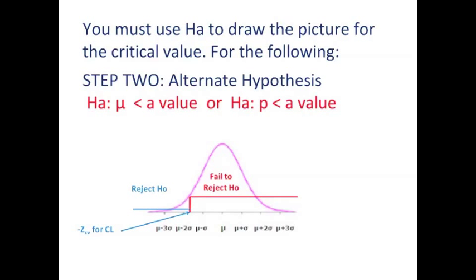Now, here we have the reverse scenario, where mu is less than a value, or P is less than a value. Notice that the way the error points, it points us directly to the rejection region. And if our confidence level is 95%, then our rejection area of 5% will be trapped on the left side, and we would have a z-critical value of negative 1.645.